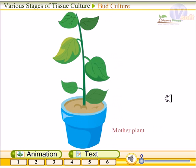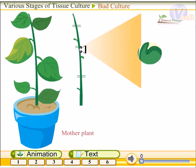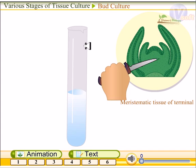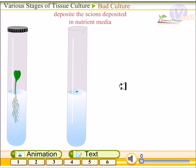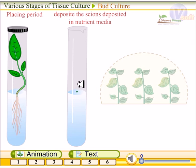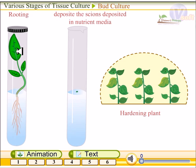The second kind is bud culture. In bud culture, a mother plant is taken and a small section from this mother plant is also taken from the meristematic tissue of the terminal layer. It is deposited in the nutrient media for a period and given all nutrients for proper rooting. Root and shoot are developed, then the plants are taken and implanted in large vials where they go through the hardening process.